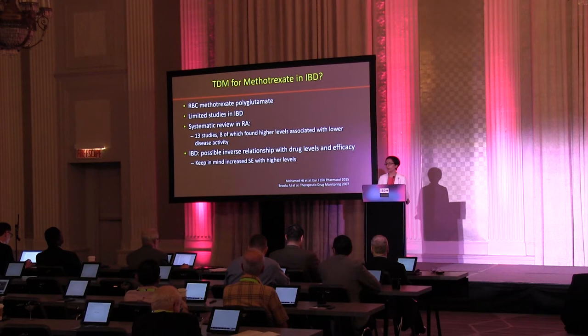What about methotrexate? We don't have much data regarding the role of evaluating the red blood cell methotrexate polyglutamate in IBD. Mostly this has been evaluated in rheumatoid arthritis, where based on 13 studies, higher levels were found to be associated with improved disease activity. Conversely, in inflammatory bowel disease we actually see an inverse relationship, perhaps owing to the side effects and toxicity that come with higher levels.